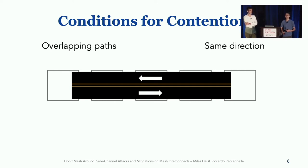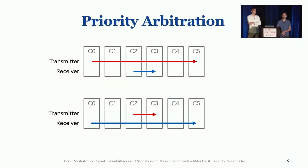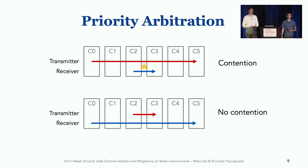In practice, when we test many different placements, we find that sometimes this is true, but not always. In fact, these two conditions are insufficient. Looking at a specific case: these two flows obey the two rules — they're overlapping and traveling in the same direction. However, in the second case where we flip the transmitter and the receiver, the contention disappears. This suggests that the receiver's flow is unable to be slowed by the transmitter — that is, the receiver's flow has higher priority in the second case.